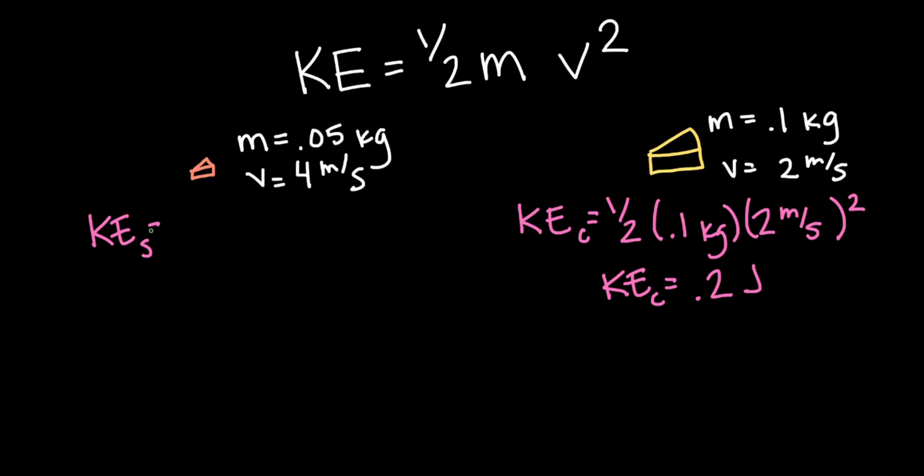the Swiss's kinetic energy is now one-half times 0.05 kilograms times 4 meters per second squared, which is 0.4 joules. So now the kinetic energy of the Swiss is twice the kinetic energy of the cheddar.